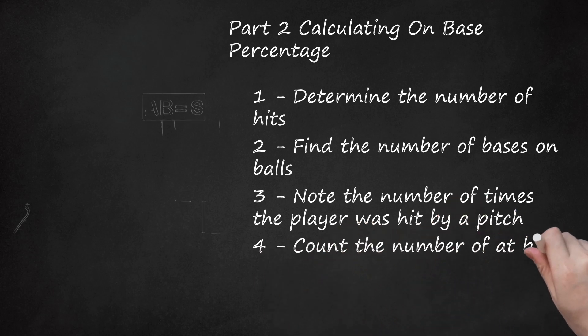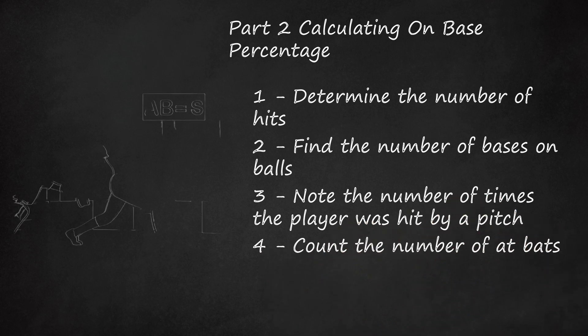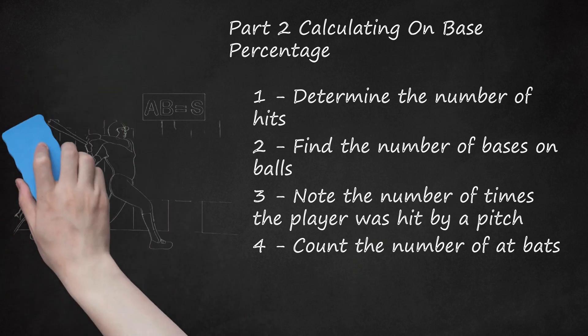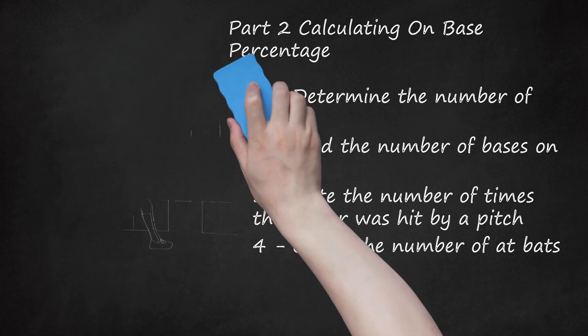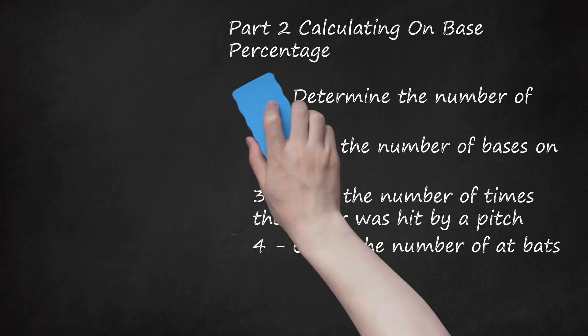Count the number of at-bats. In order to determine the on-base percentage, you need to know how many times the player batted. Most batters will stand to hit four or five times during a game, but there is tremendous variation here. In the example above, Blackman stood to bat five times, so AB would be equal to five.